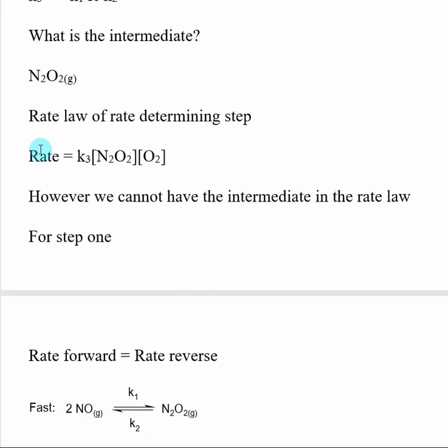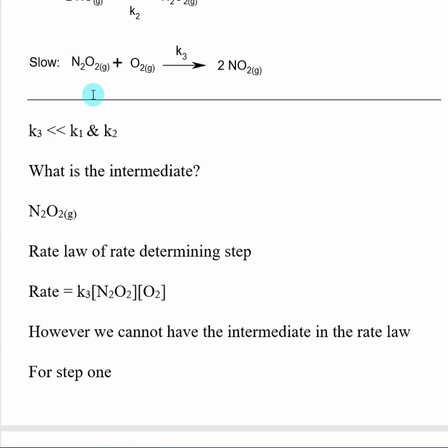We know that the second step is going to be the rate determining step because it's slow. And because it is an elementary process, I can come up with a rate law expression for step two just by looking at the stoichiometry. Rate equals K3 times the concentration of reactants. There's no stoichiometry, so there's implied one.